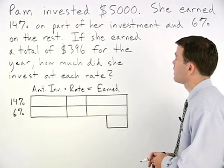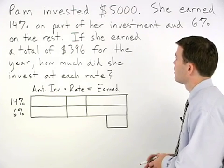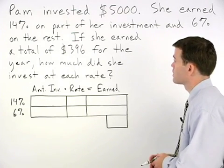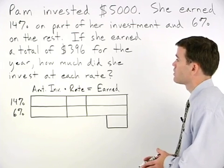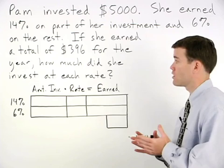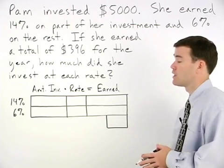Pam invested $5,000. She earned 14% on part of her investment and 6% on the rest. If she earned a total of $396 in interest for the year, how much did she invest at each rate?